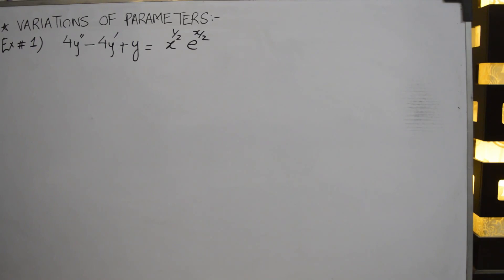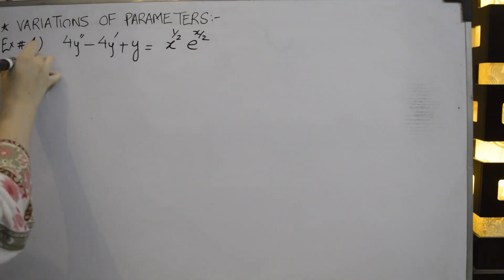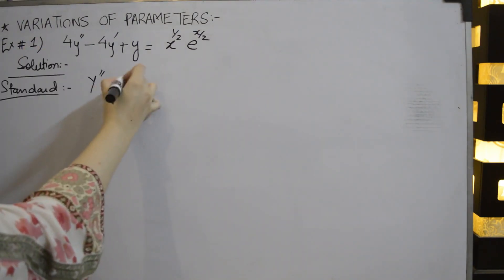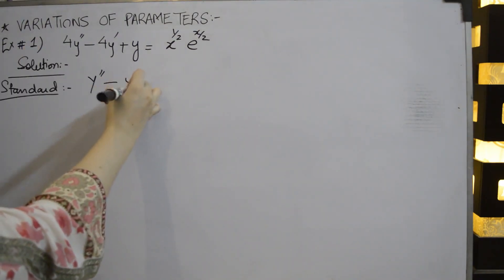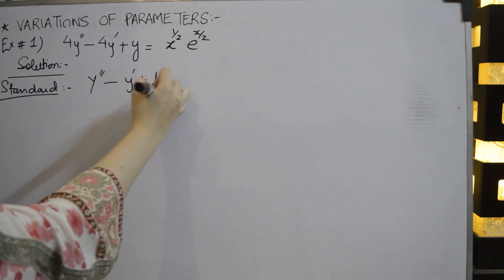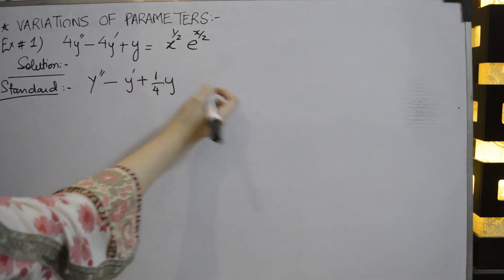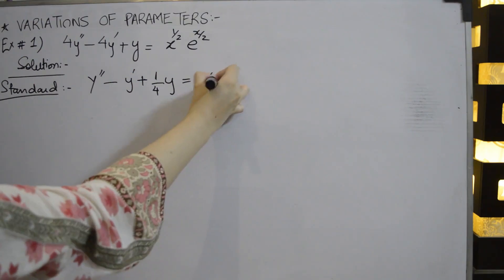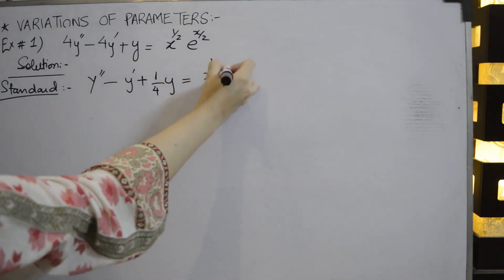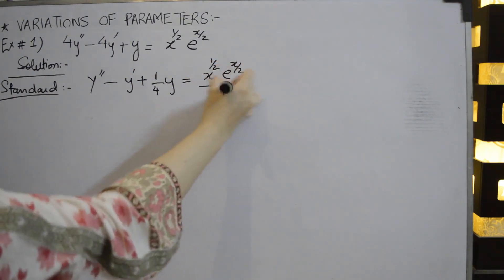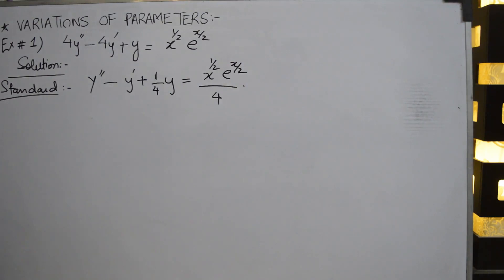The first step is to convert it into the standard form. Dividing by 4, the equation becomes y'' - y' + (1/4)y = (x^(1/2) * e^(x/2)) / 4. It has now been converted into the standard form.